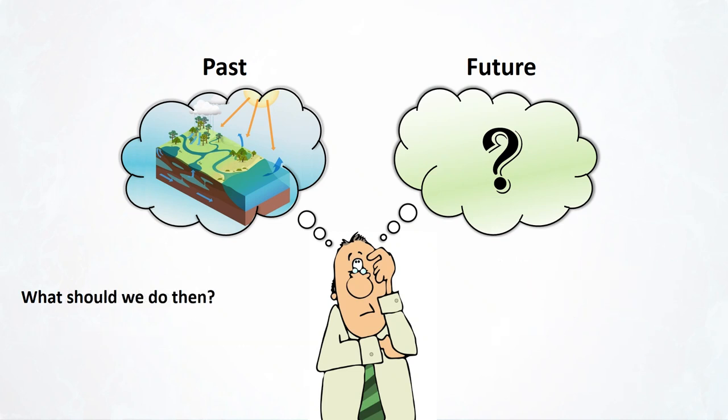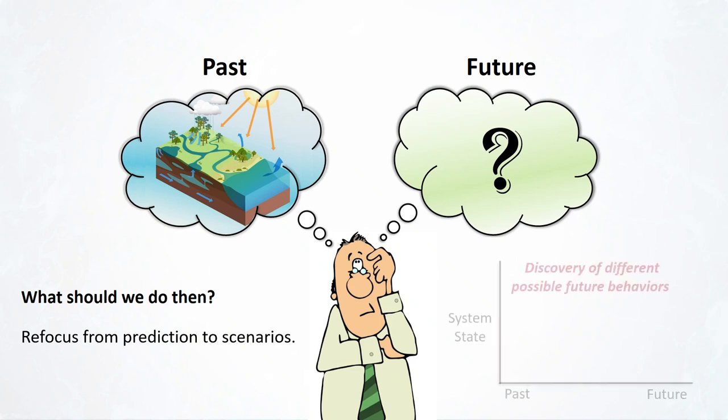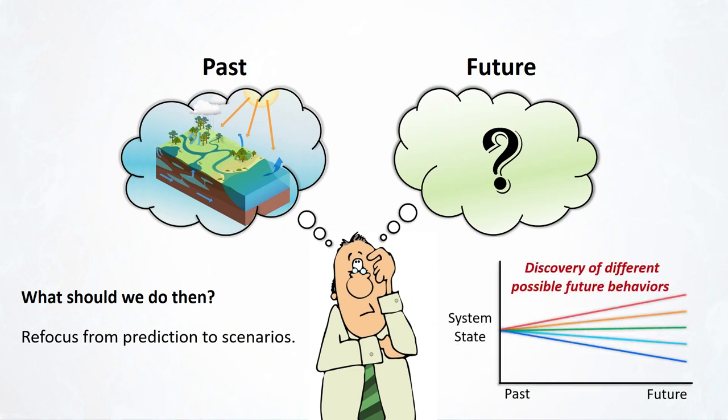So then the question is, what can we do about it? One solution is to refocus from prediction to scenarios. It means we should discover different possible behaviors that the water systems might demonstrate in the future. Then we use that knowledge to develop new paradigms and models that work in a non-stationary world to give us a credible picture of the different scenarios that might happen in the future.